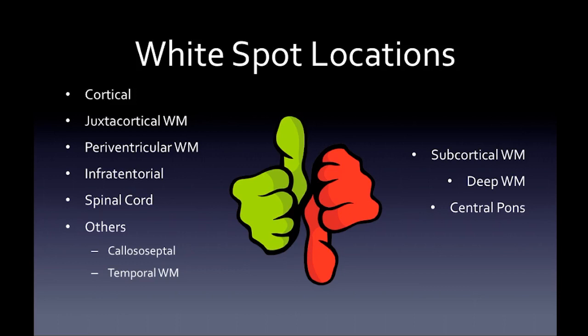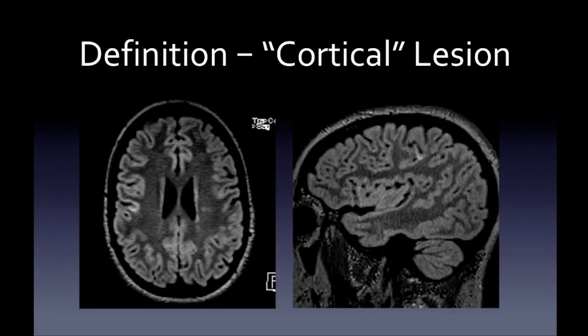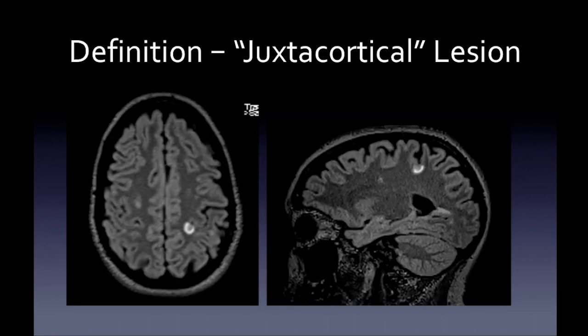For cortical lesions, you can see a lesion in the cortex here with the yellow arrow. These are best appreciated on double inversion recovery images, though you can window a 3D FLAIR similarly. The cortical lesion location is new for the 2017 criteria. For juxtacortical lesions, the lesion must touch the cortex — there cannot be any normal-appearing subcortical white matter between the lesion and the cortex.